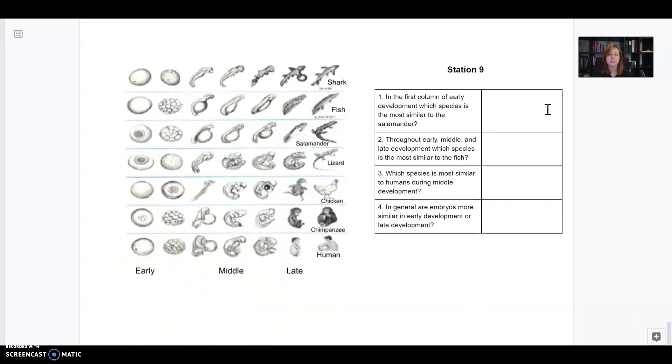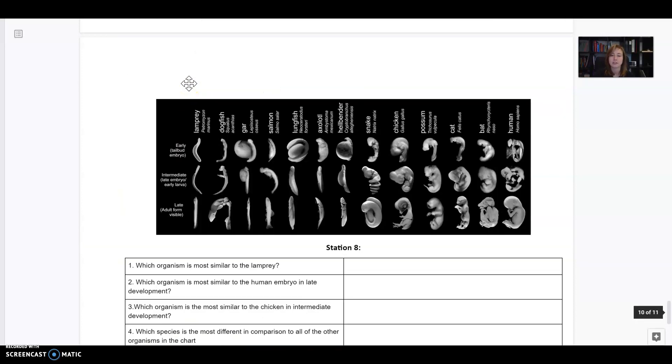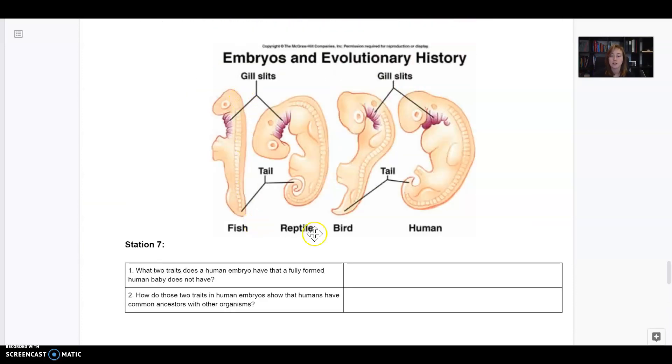Here's our last station. Station nine is also talking about embryos. And this is showing you the same thing. It's showing you that at the beginning, they all look really similar. Here's the beginning stages, here's the middle stages of development, and then late development. Look how different they are. They become really different in late development. And then this is showing you the adult version of it. So remember, in early development, embryos all look really similar. And that's evidence of evolution. And they all have gill slits and a tail. Even though humans don't end up with gills at the end or with a tail when they're born, they have it to begin with because they have common ancestors with these other animals.